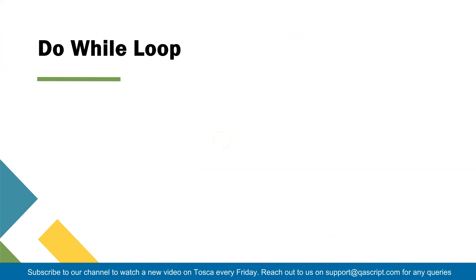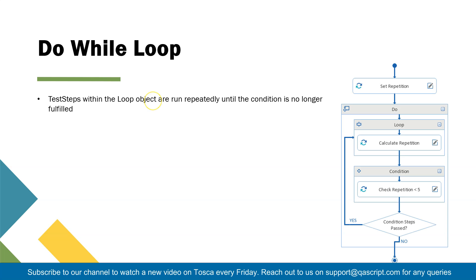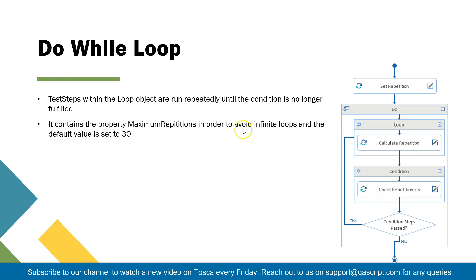Now let's talk about the next type of loop: the do-while loop. It's pretty similar to the while loop but there is a key difference. In a do-while loop, the test steps within the loop object are run repeatedly until the condition is no longer fulfilled. The major difference is that the statements inside the loop execute at least once even if the condition is not initially satisfied, because the condition is checked afterward. So 'Calculate Repetition' executes at least once before the condition is checked — the opposite of how a while loop works.